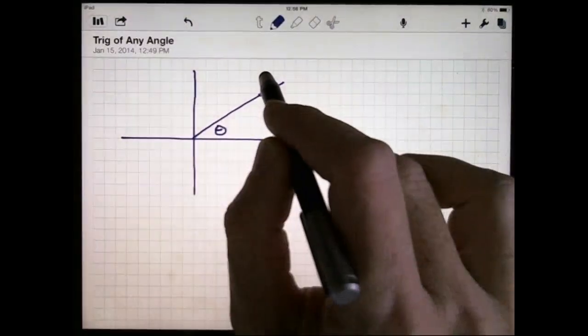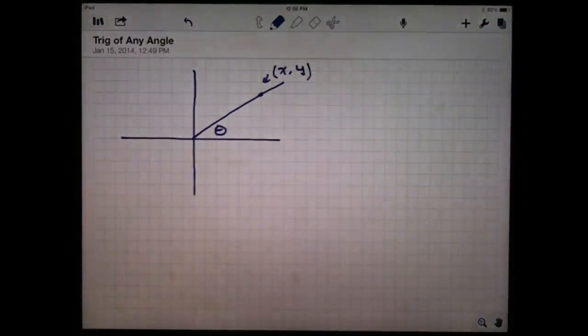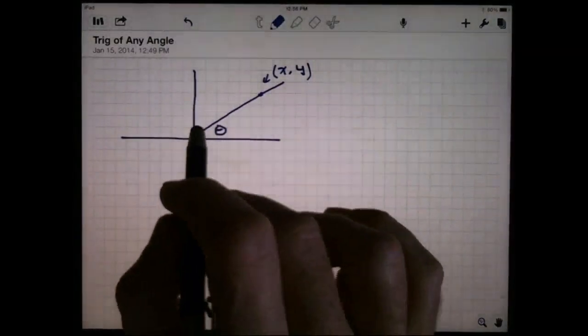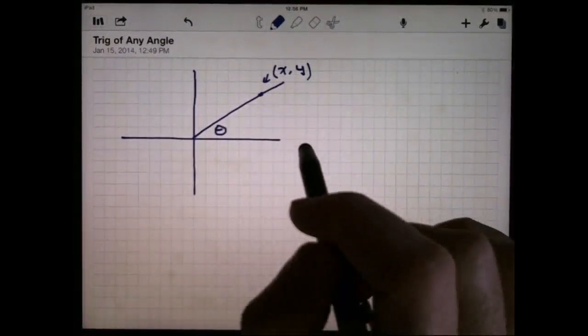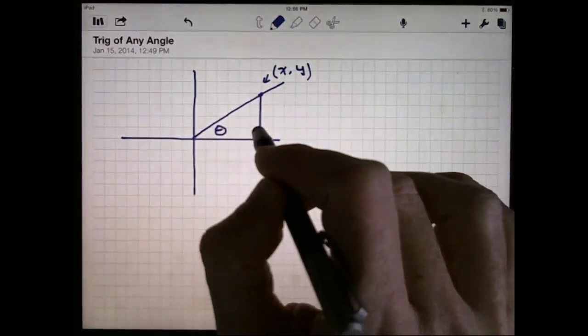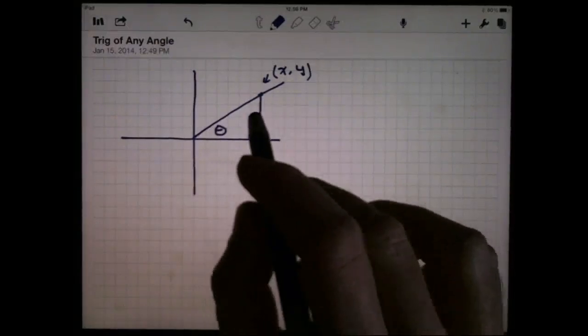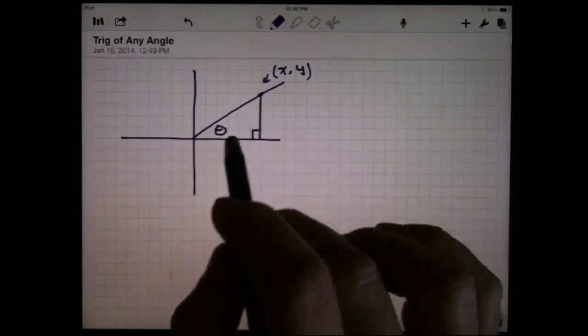That point has coordinates. It's got an x-coordinate and a y-coordinate. Now those coordinates are more than just numbers. The x-coordinate is telling you how far away from the y-axis you are. The y-coordinate is telling you how far away from the x-axis. So if I take a line from that point, drop it straight down to the x-axis, and please make sure you do this to the x-axis, I've got a right triangle in there.